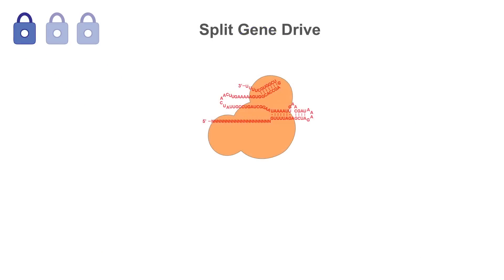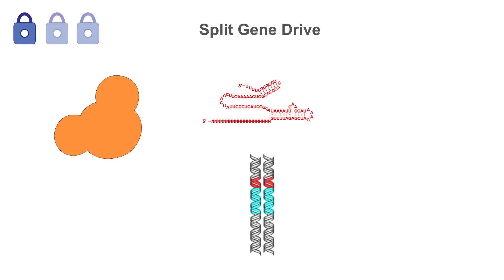The first safeguard is to split the two components of the gene drive and include only one of them in the altered gene. For example, an organism carrying a split gene drive might have the altered gene together with the sequence encoding guide RNAs.